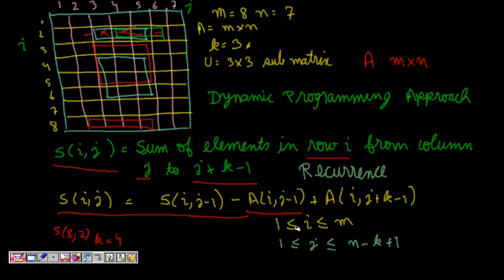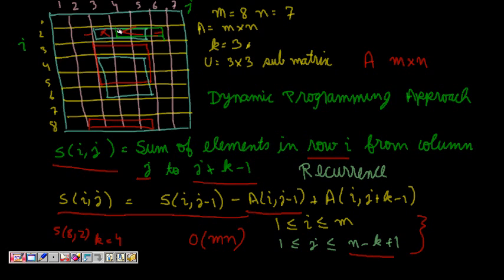We calculate S[i][j] for i from 1 to M (all rows). The column index j can only slide from 1 to N−k+1, since we cannot go beyond the matrix. This step takes O(MN) time, as we traverse each column in each row. This completes the first step of dynamic programming — constructing the subproblems. However, we still need the full K×K submatrix sum; so far we have only computed a row vector of size K.